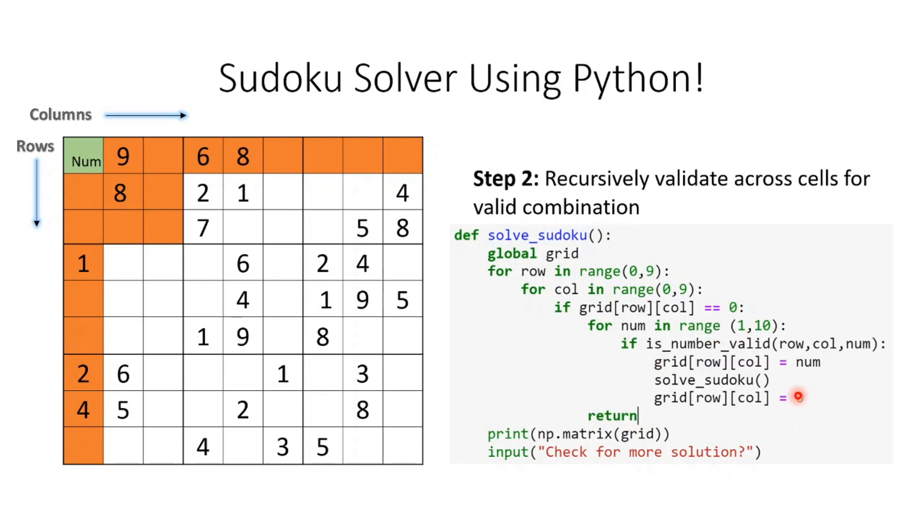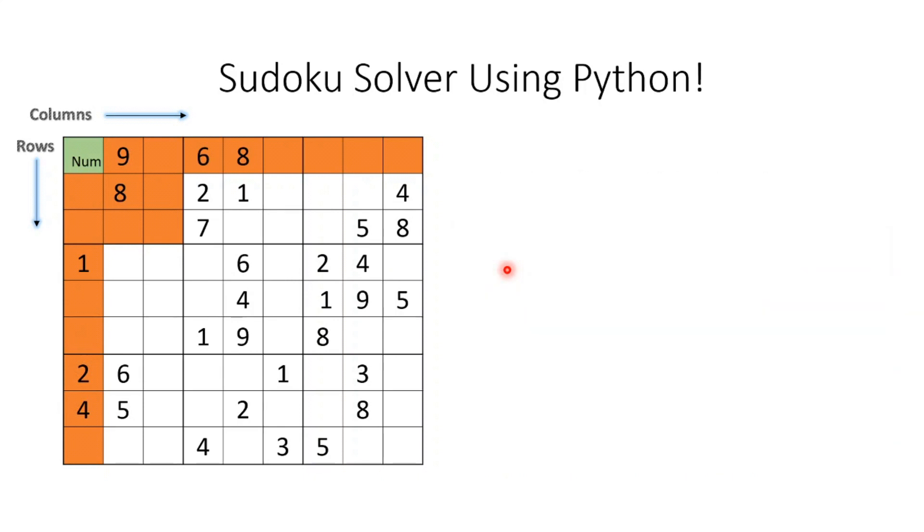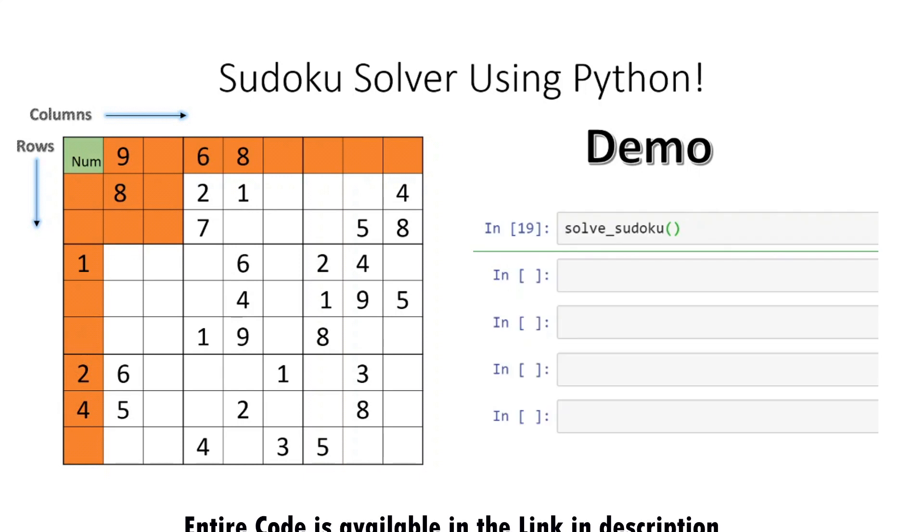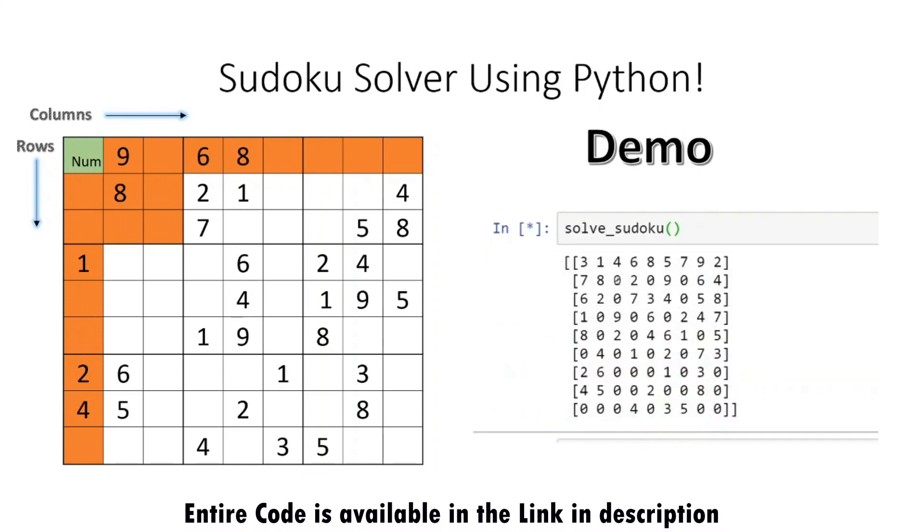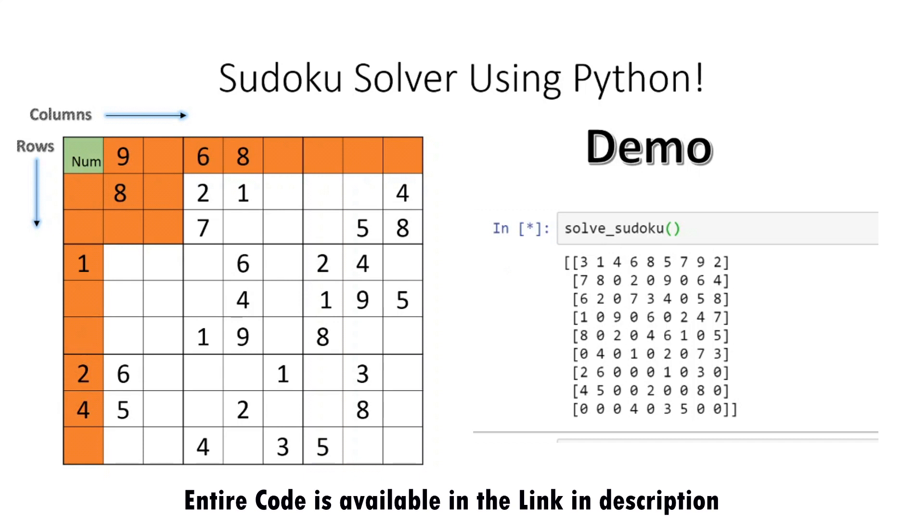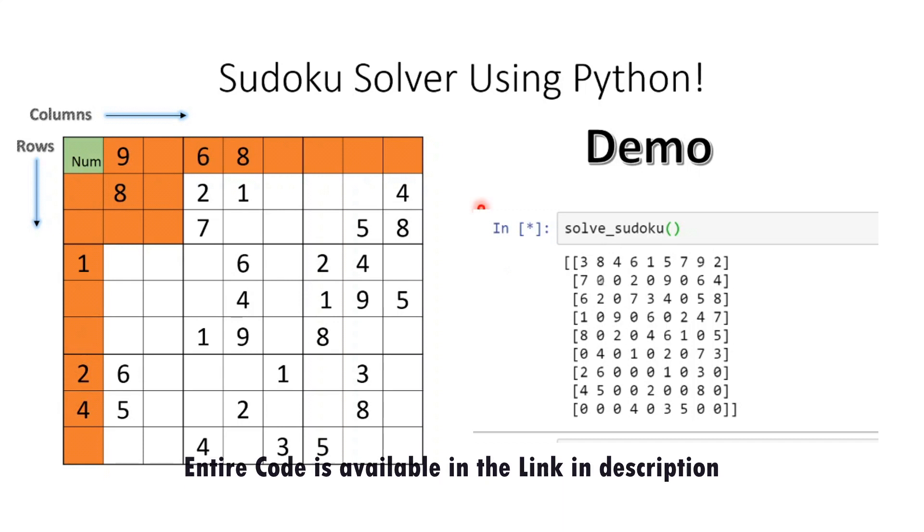Let's see the whole code in action. Here is the demo of the solver function. As you can see, it's trying to fill in and replace the zero values with the actual values. Whenever it's failing, it's reverting back to the top and filling it again.